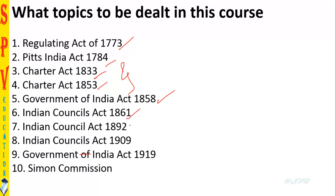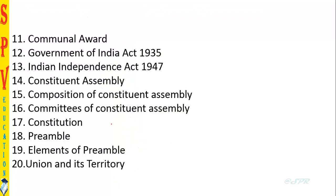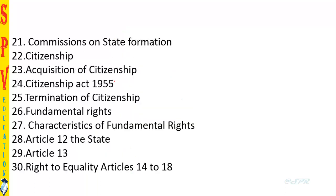We'll cover the Indian Councils Acts of 1892 and 1909, Government of India Act 1919, the Simon Commission, the Communal Award, and Government of India Act 1935, India Independence Act 1947, the Constituent Assembly — its composition and committees — the Constitution's formation, the Preamble, its elements and importance, and then Union and its Territories, and the Commission on States.